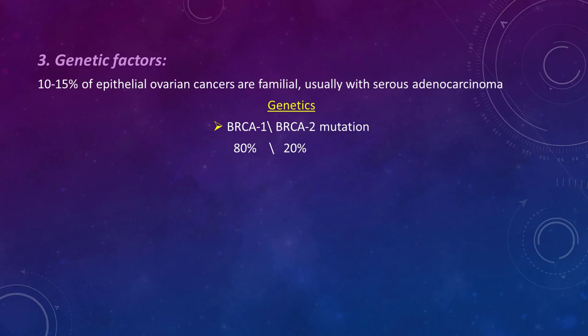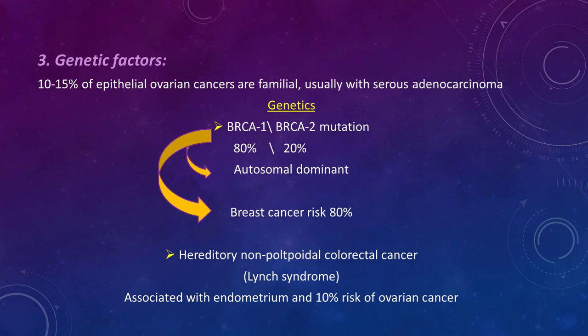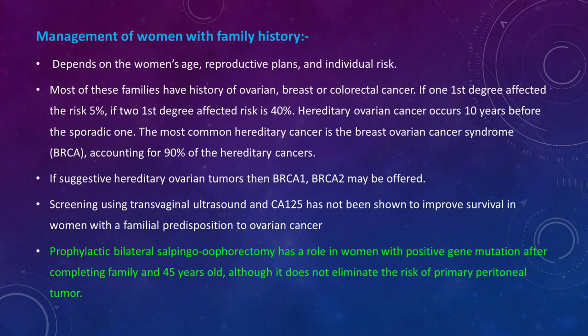Breast cancer risk in women with positive BRCA genes is about 80%, which is very high. Another hereditary genetic condition is hereditary non-polypoid colorectal cancer, called Lynch syndrome, which is associated with endometrial cancer and a 10% risk of ovarian cancer, as well as colorectal cancer. Management of women with a positive family history of breast or ovarian tumor depends on the woman's age, reproductive plans, and individual risk.